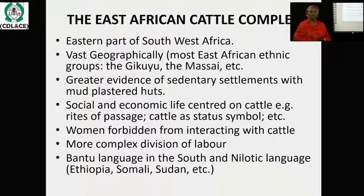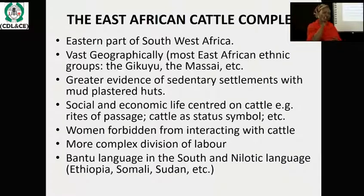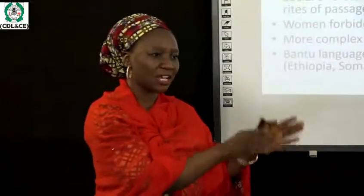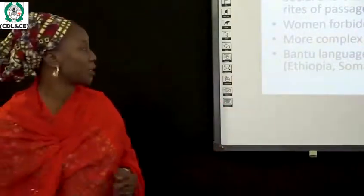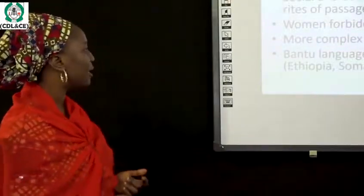In the East African Cattle Complex, it is wrong for a woman to interact with cattle. Even when women use products from cattle, it is left for the men to obtain and provide them to the women. This creates a more complex division of labor — each gender knows its specific role in the society.